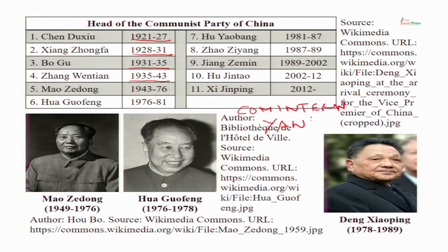Mao Zedong gradually became the leader of the People's Liberation Army, the military wing of the Communist Party, in the Yan'an camp. He was able to concentrate power in his hands, and by 1943 he became the undisputed chairman of the Communist Party, remaining chairman until his death. It was Mao Zedong who founded the People's Republic of China. He became the paramount leader — supreme leader of China — and also remained head of the military through the Central Military Commission as well as chairman of the Communist Party.